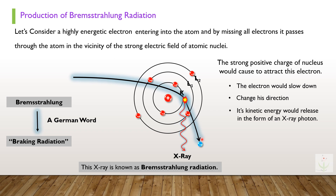During this interaction the electron may lose all of its energy or may not lose any energy. The energy of Bremsstrahlung radiation depends on how close the electron passes by the nucleus, which is why its energy is not fixed and quantized like characteristics X-rays. These radiations are usually filtered out as they have no fixed energy and wavelength. That was an overview of the production of X-rays; these topics will be discussed in detail in our upcoming lecture series.